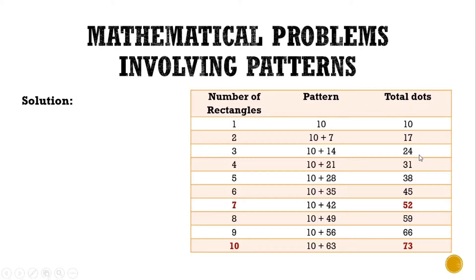As you can see, we are just going to add 7 for each rectangle that is being added, to find the total number of dots.